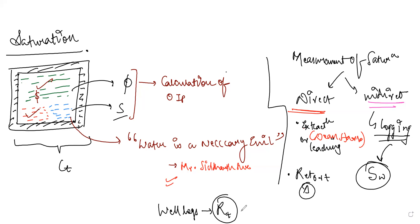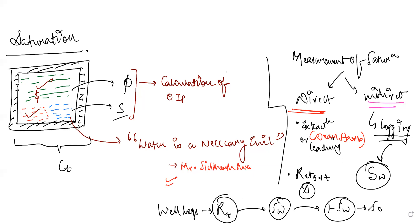If your rock has a lot of water, its resistivity will be quite low; if it has a lot of oil, resistivity will be quite high. This indirectly gives a measurement of saturation. We use it to calculate water saturation, and then one minus water saturation gives oil saturation — or hydrocarbon saturation if gas is also assumed present. The equation used is Archie's equation.